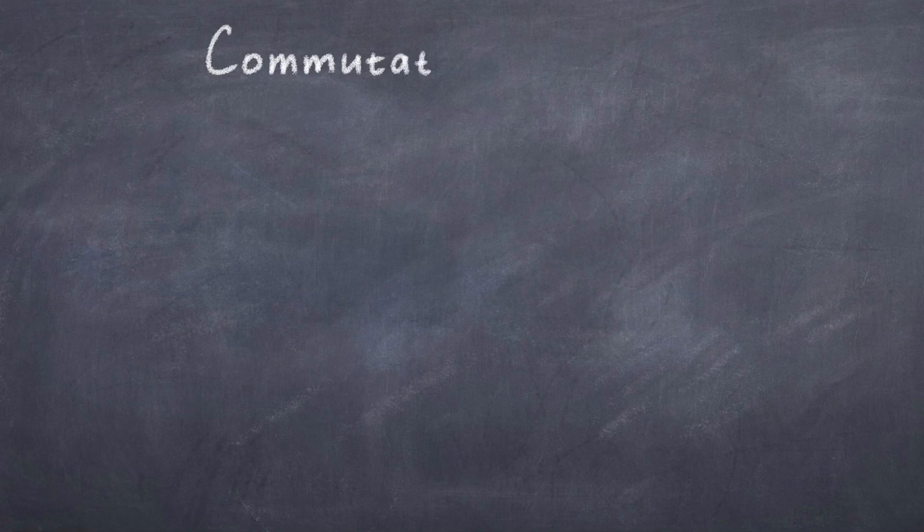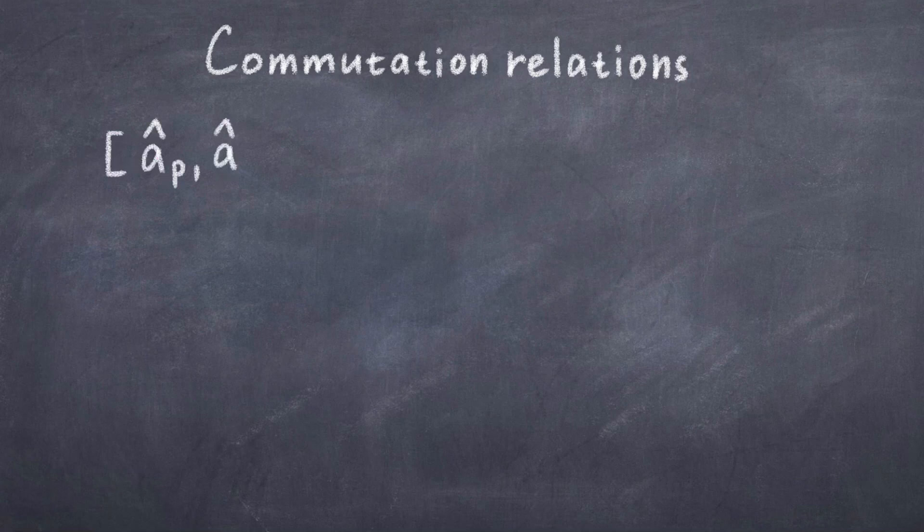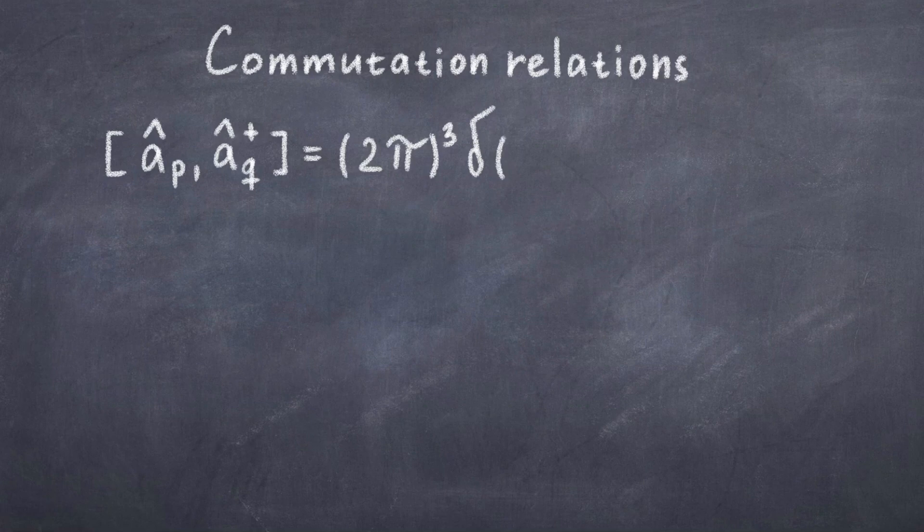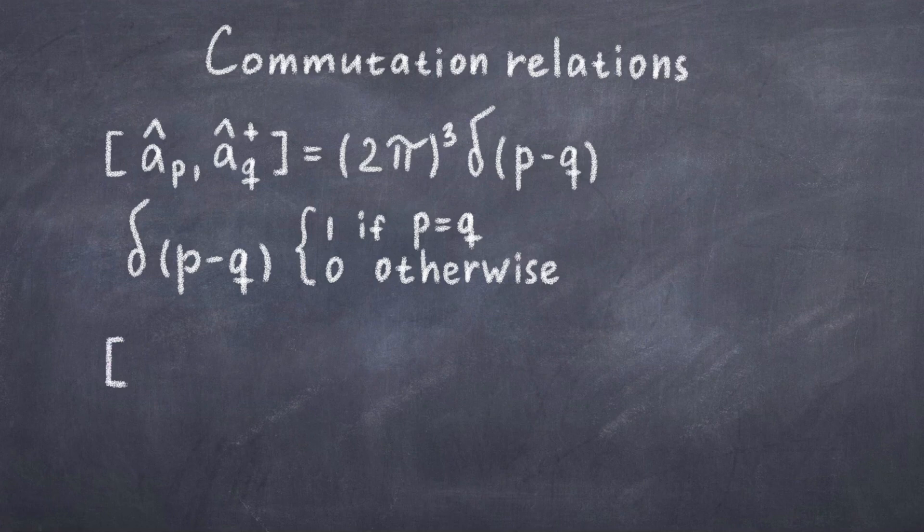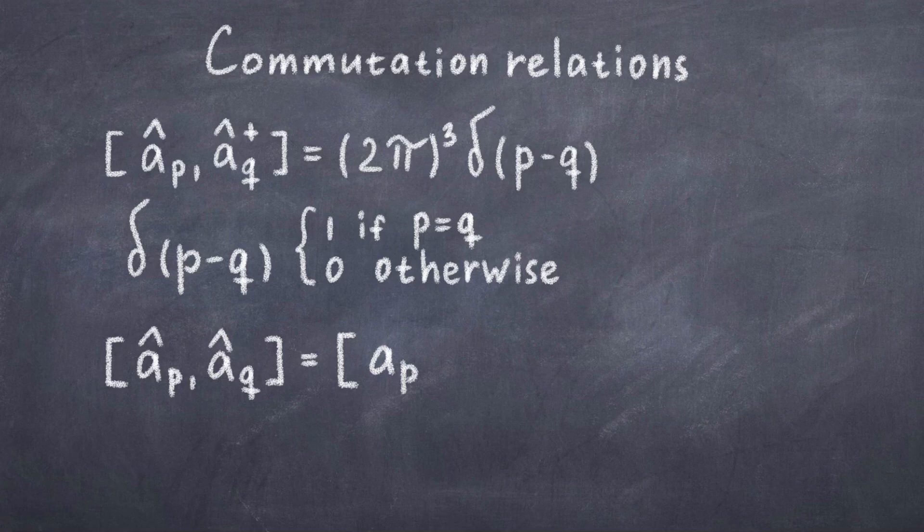These new creation and annihilation operators have the following commutation relations. The commutation relation between ap hat comma aq hat dagger is equal to 2 pi cubed times the delta function between p and q. The delta function is rather simple. If its argument is zero, thus if p is equal to q, then it is equal to 1. Otherwise the delta function is zero. We also have the relation that ap hat comma aq hat is equal to ap hat dagger comma aq hat dagger is equal to zero. Thus only the commutation relation between a creation and annihilation operator is nonzero. The Klein-Gordon equation might be very simple, but further inspection reveals that it satisfies the Bose-Einstein statistics. This means that this simple theory can explain spin-zero bosons. This is not far from the quantum field theories of the standard model.